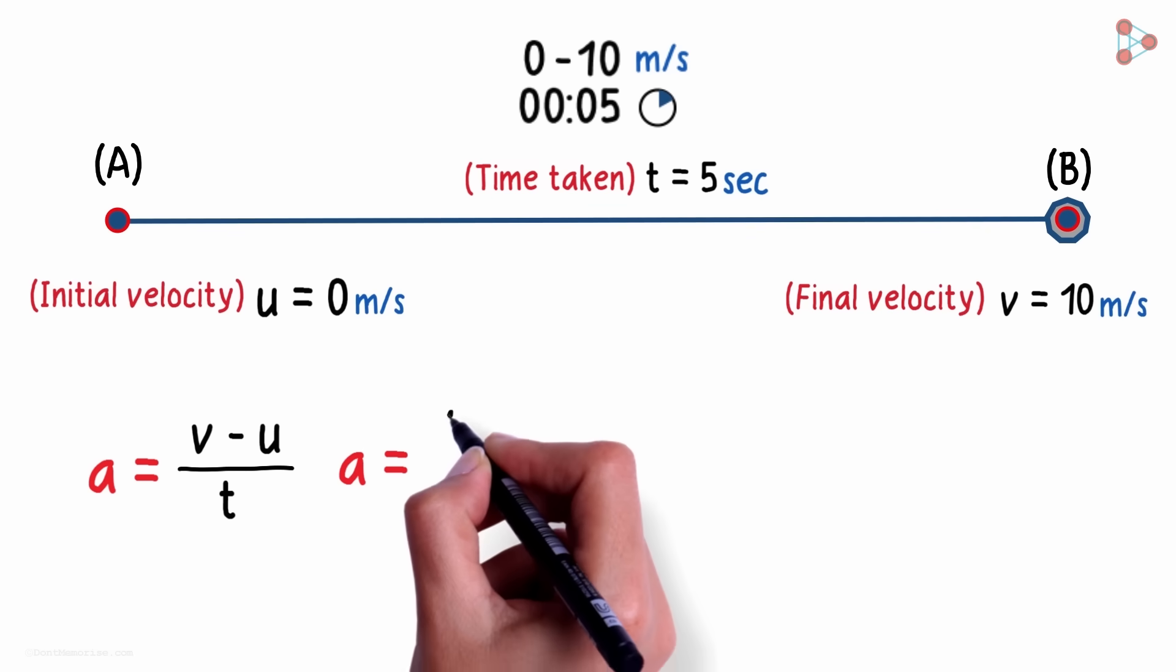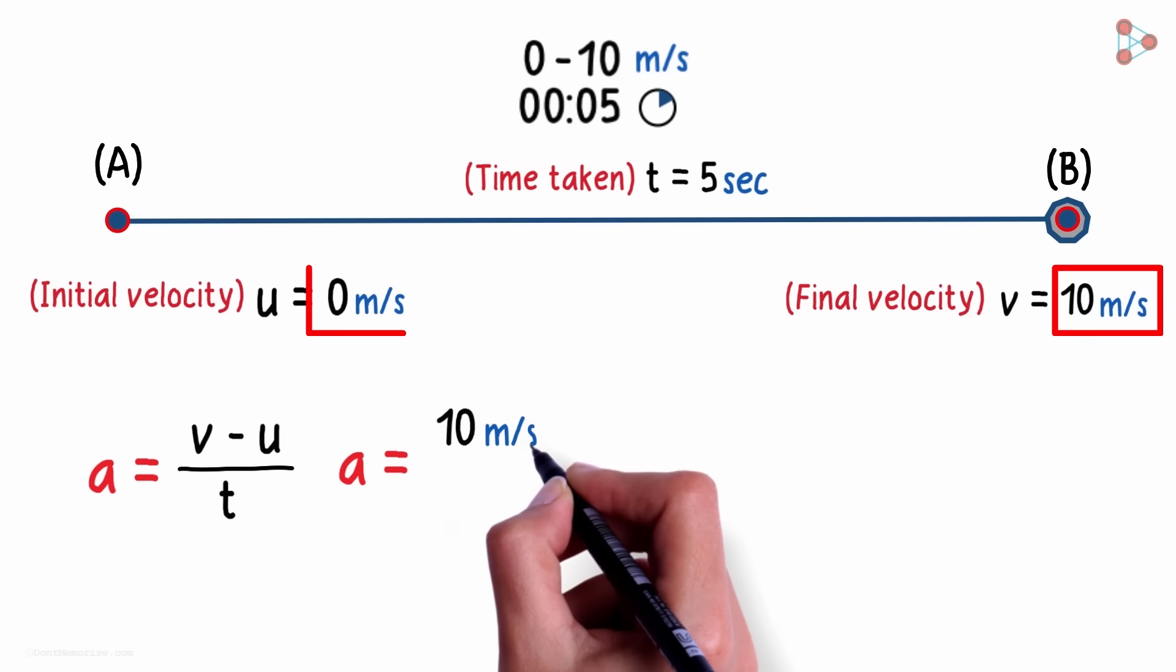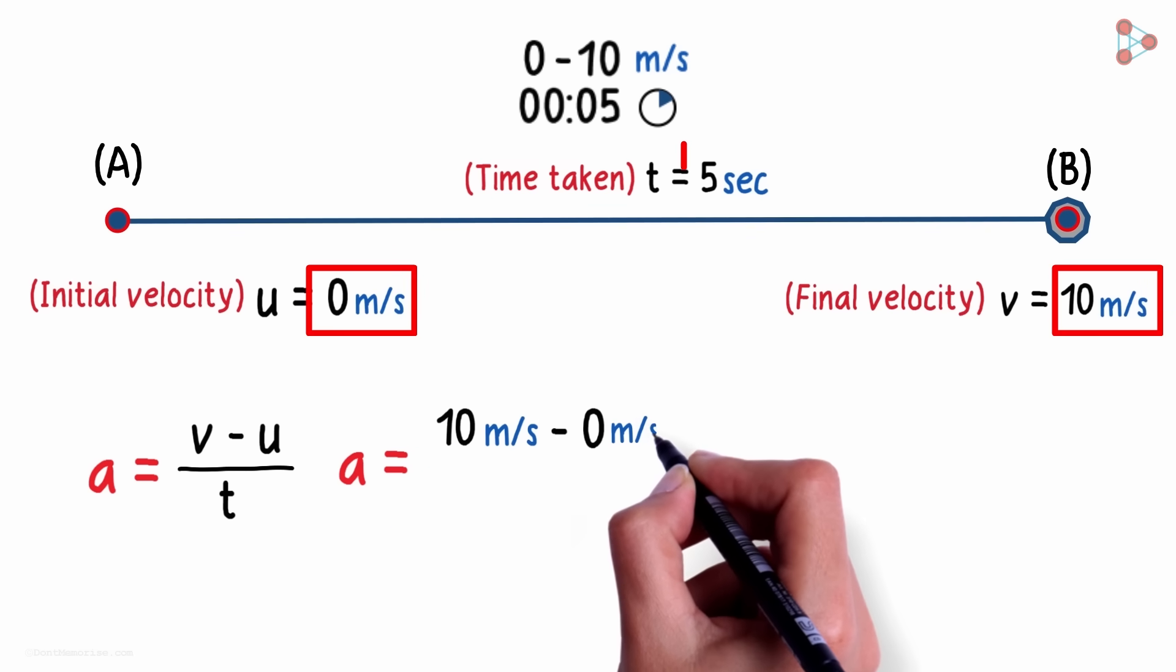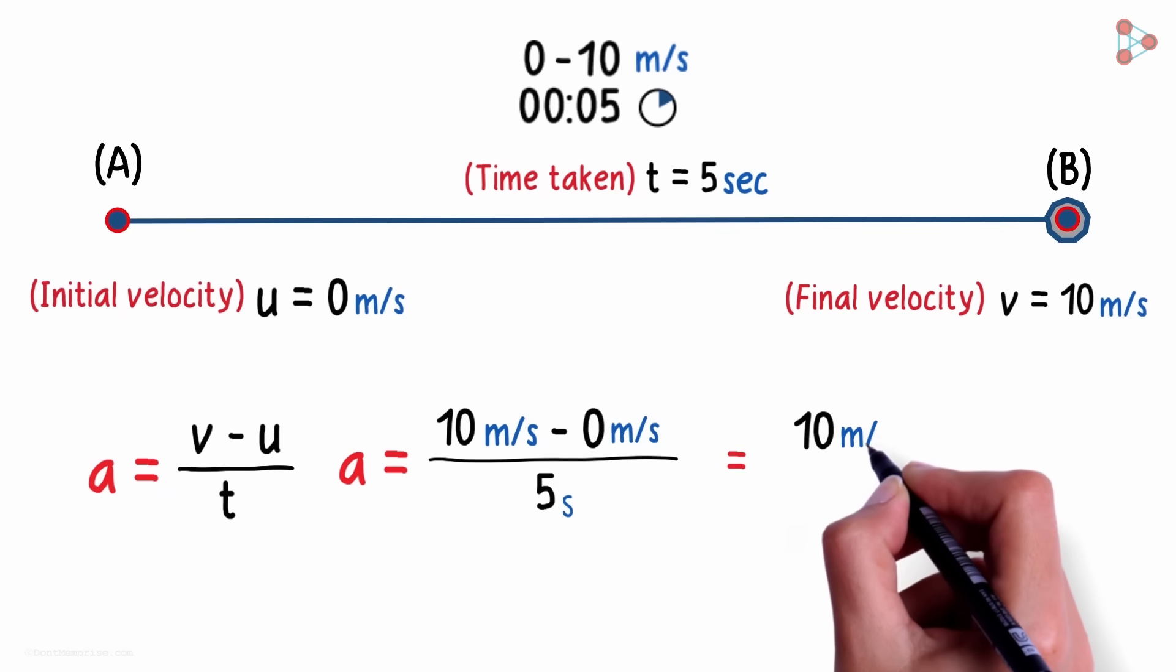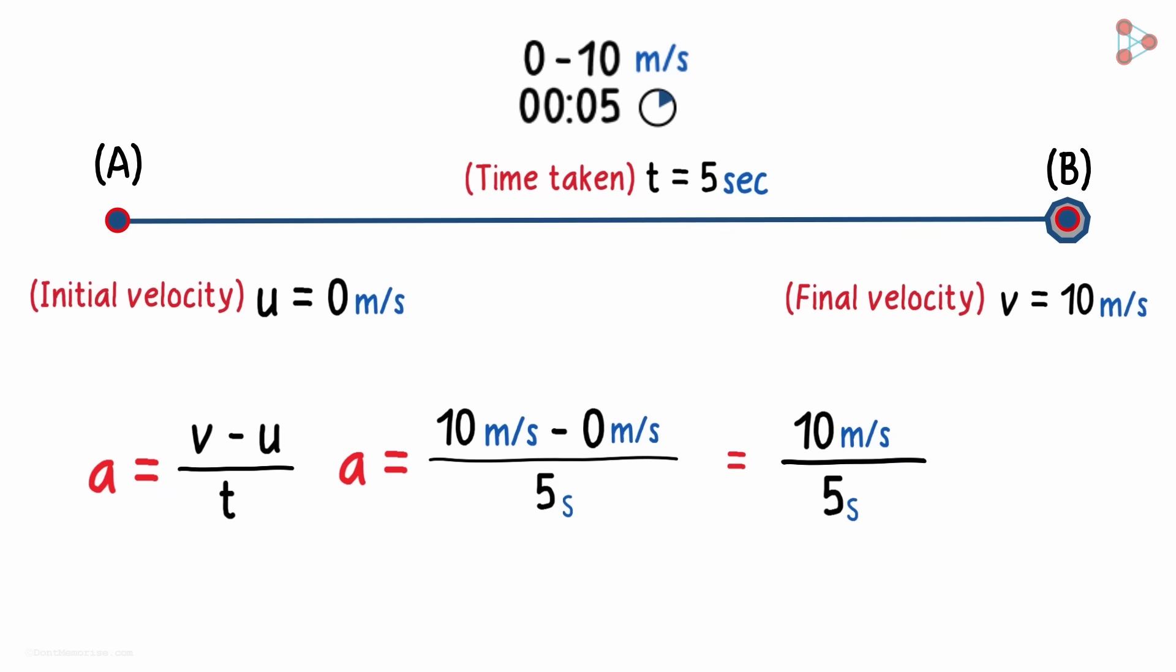Hence the acceleration a will equal 10 m per second minus 0 m per second divided by 5 seconds. So this will equal 10 m per second divided by 5 seconds. 10 divided by 5 is 2.